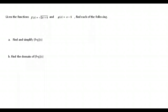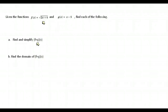In this lesson we are going to do some arithmetic with our functions when there's just an x there and we're not given an actual number to plug into the function, and we'll also find the domain. Here's our first example: f of x is the square root of 2x plus 4, and g of x is x minus 5. We're asked to do f plus g of x, so that tells us to do f of x plus g of x.